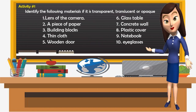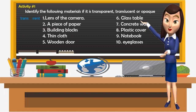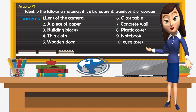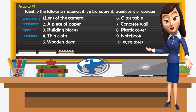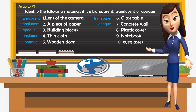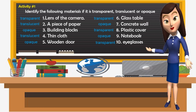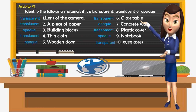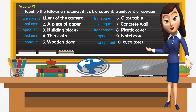Now let's have an activity. Identify the following materials as transparent, translucent, or opaque. Number 1: lens of the camera — transparent. A piece of paper — translucent. Building blocks — opaque. Thin cloth — translucent. Wooden door — opaque. Glass table — transparent. Concrete wall — opaque. Plastic cover — transparent. Notebook — opaque. Eyeglasses — transparent. Sunglasses — translucent, because the lens of sunglasses is not clear or transparent — sometimes it is dark.